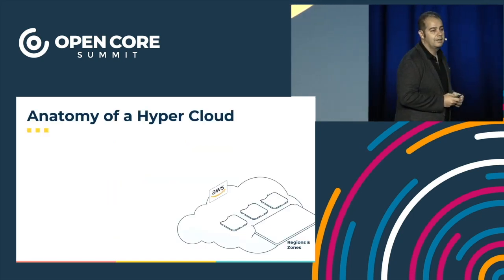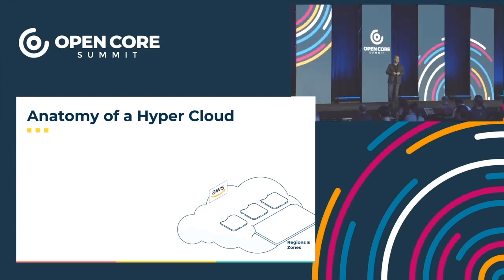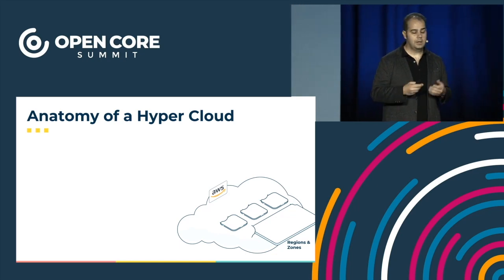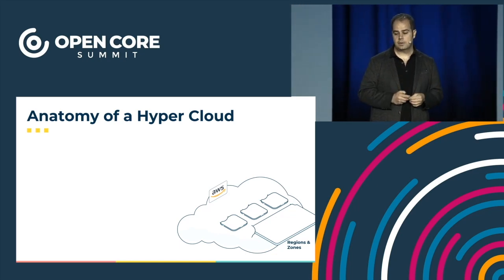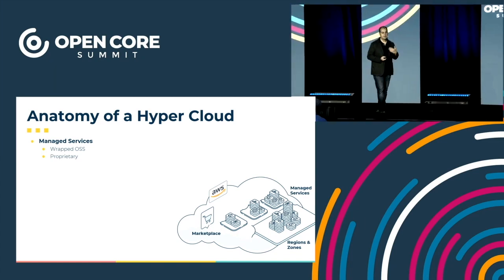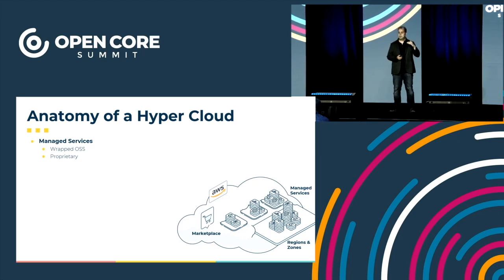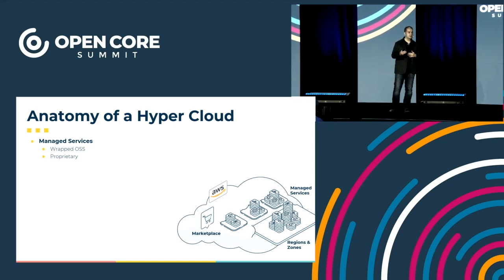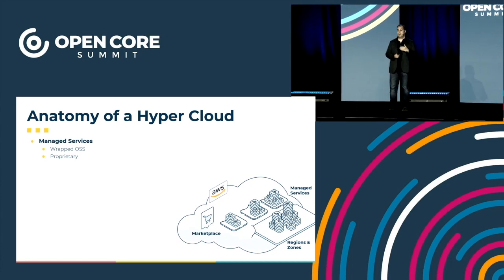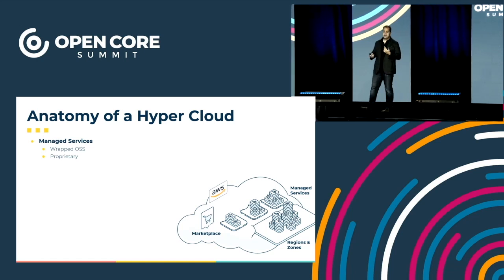Let me start with the anatomy of a hypercloud. Let's step back and look at what a typical hypercloud is made of. Every hypercloud has a set of regions and fault-tolerant domains — zones. Typically a hypercloud offers a set of managed services, whether they're infrastructure services like VMs, containers, and functions, or even platform-level services like databases, message queues, caches, etc. — and all the way up to applications and productivity apps.